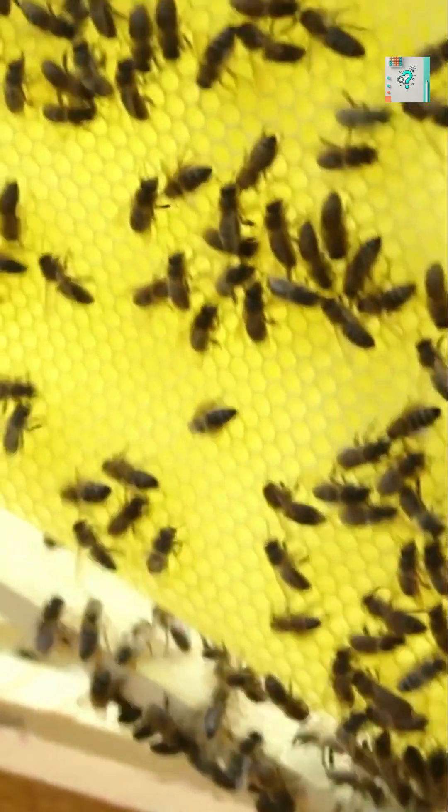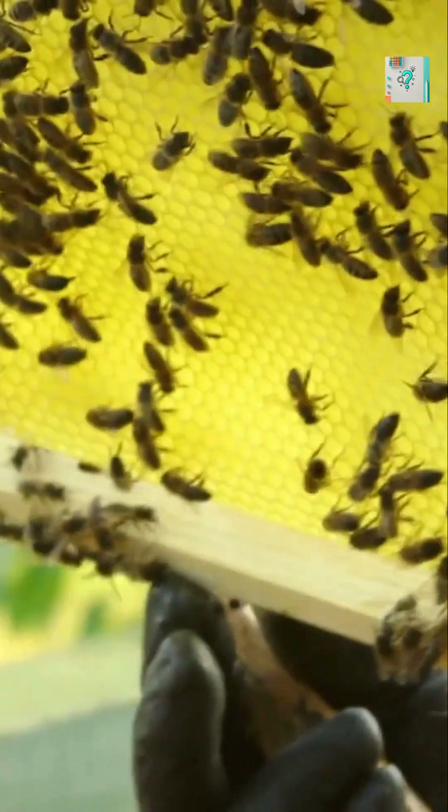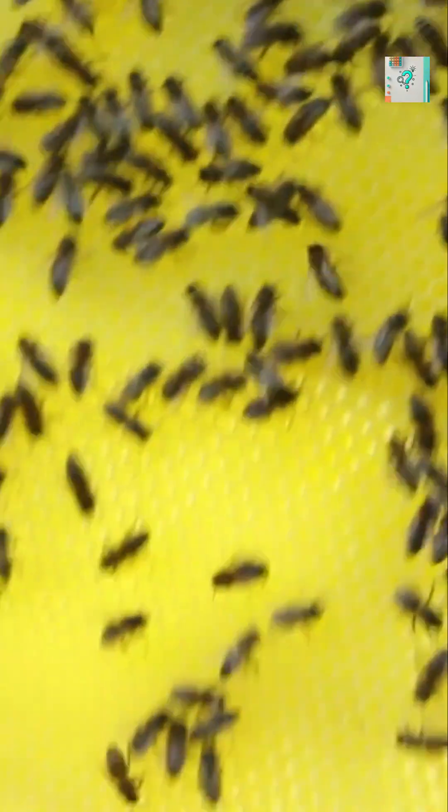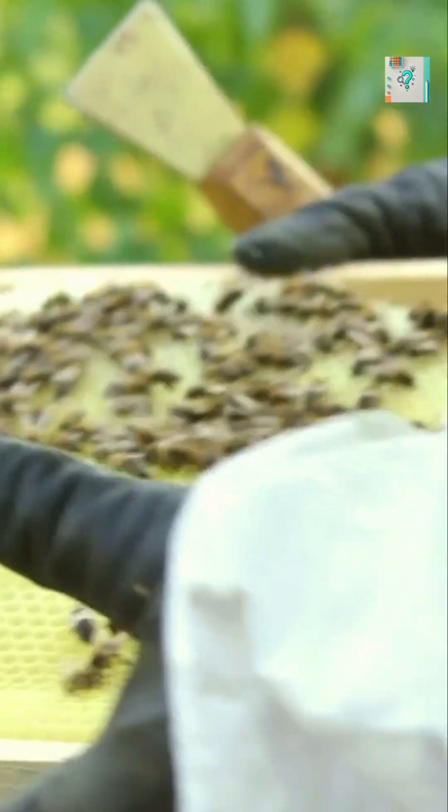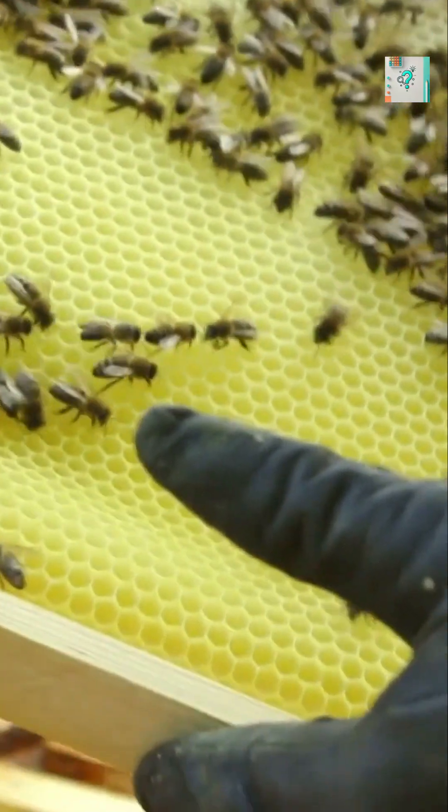Bees add one more safeguard. While making honey, they release an enzyme called glucose oxidase. When honey is diluted, this enzyme produces hydrogen peroxide, a natural antiseptic. It's the same compound used to clean wounds.